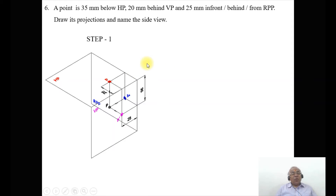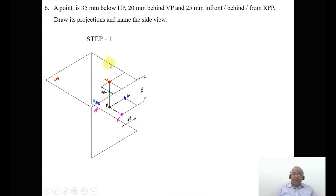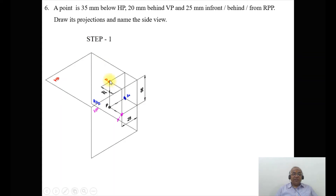Once we look from the right side view, we can see below HP and behind VP. The below HP distance is seen here, and the behind VP distance is seen here. So these two distances can both be seen directly in the right side view. When the point is behind RPP, which is 25 mm, this is seen in the front view. And when looking from the top view, you can also see that distance.